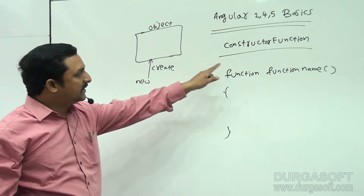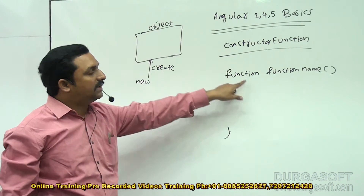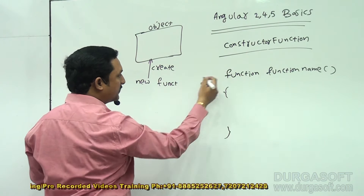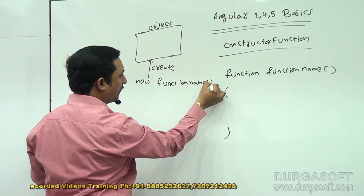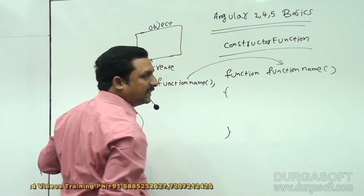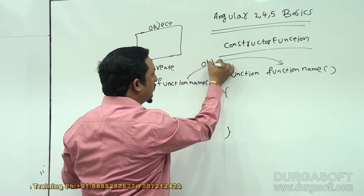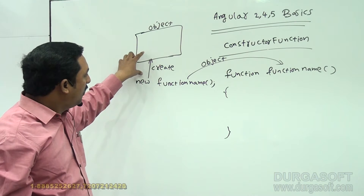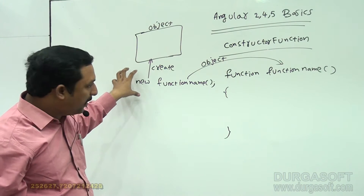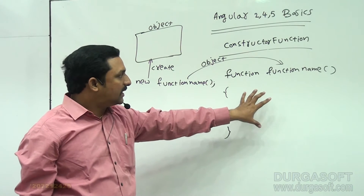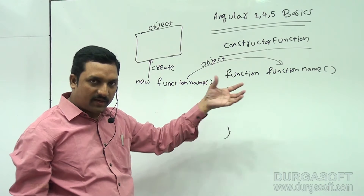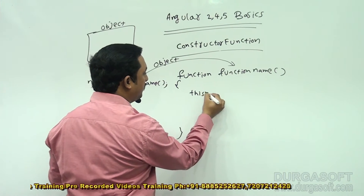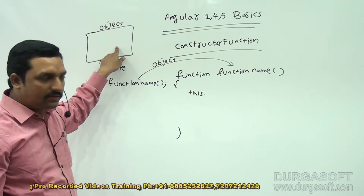We have to call this constructor function and give this object to it. Just after writing new, if you give the function name, it will call that function, and at the same time automatically the object will be passed to it. The new keyword creates the object, and the system will automatically pass this object to the constructor function as input. The constructor function receives the object through the this keyword, which refers to the current working object created through the new keyword.